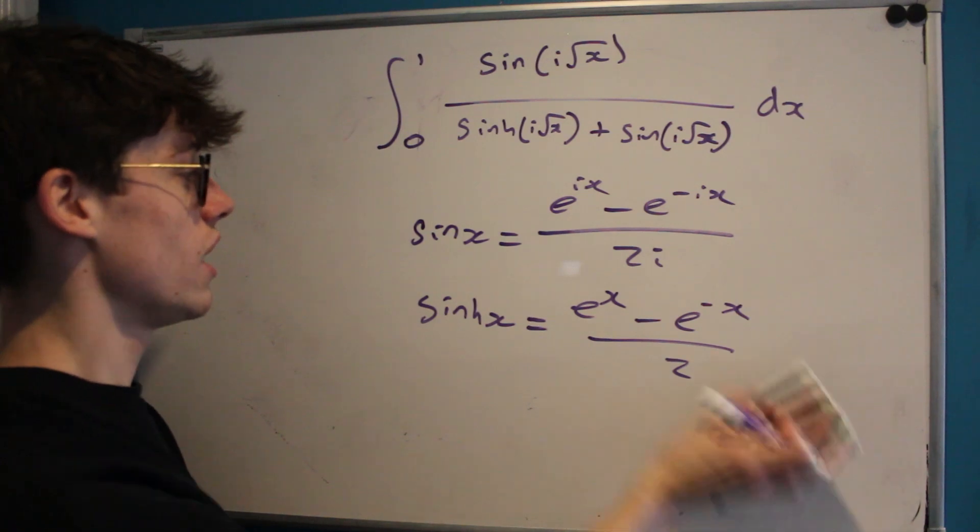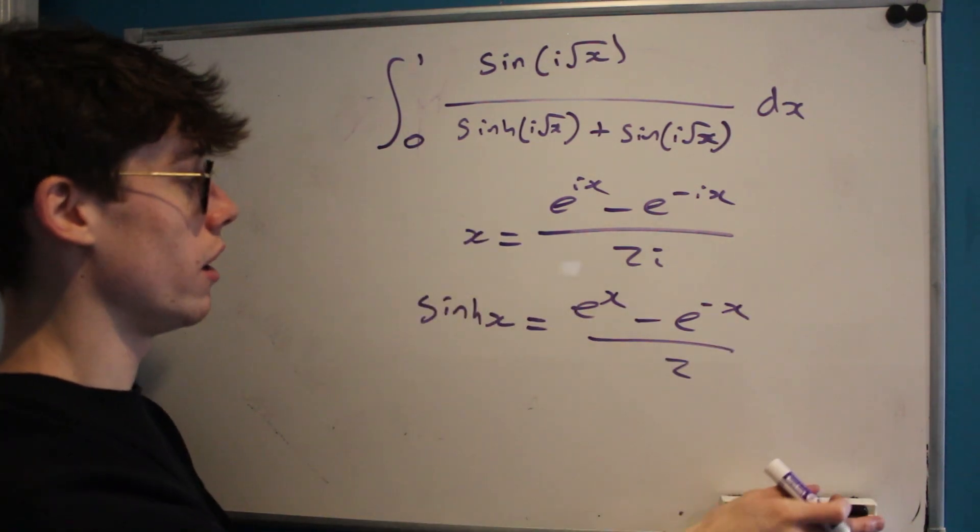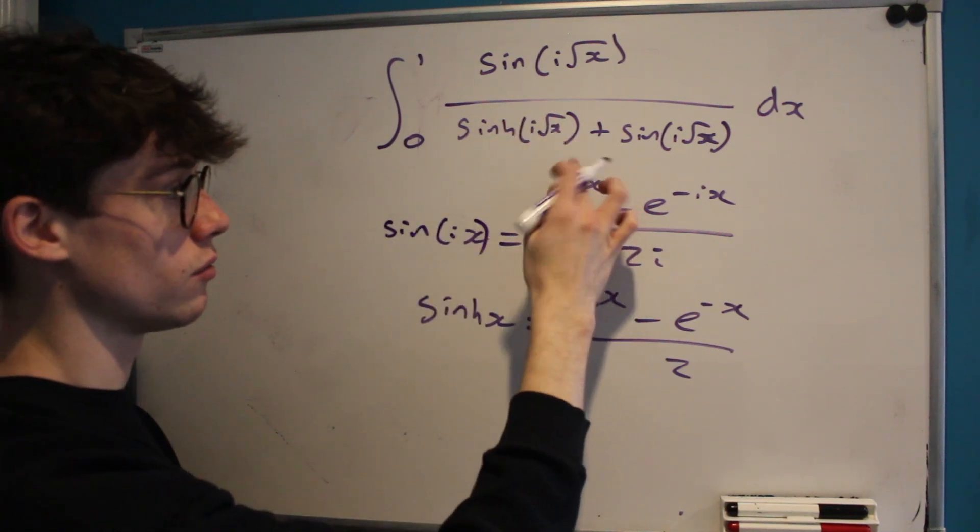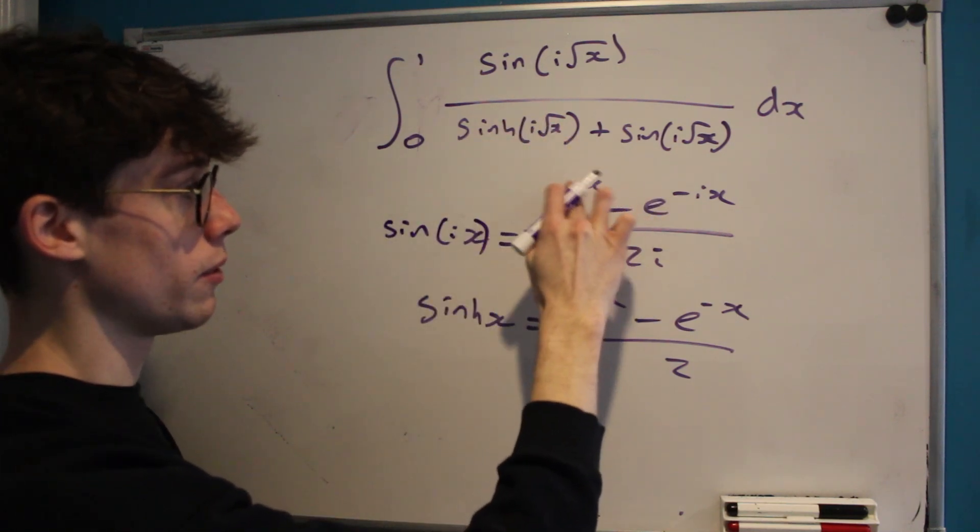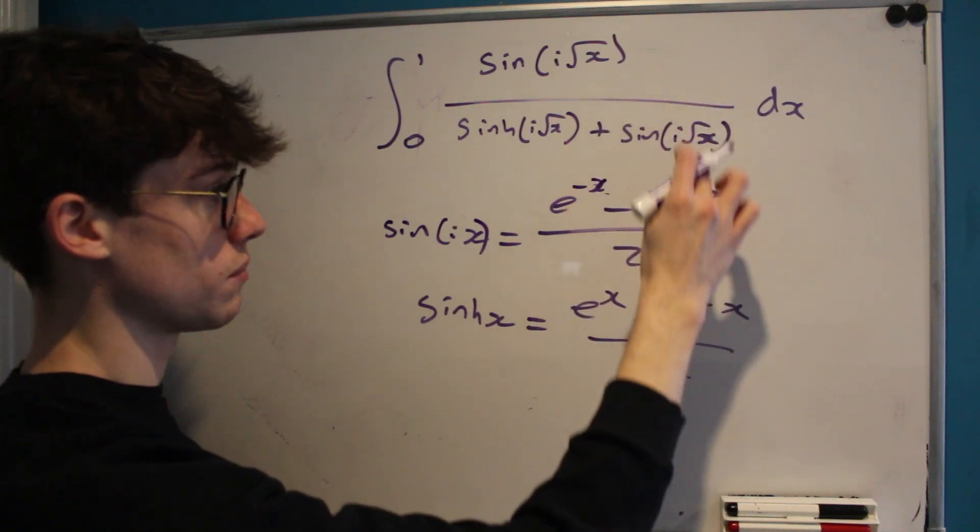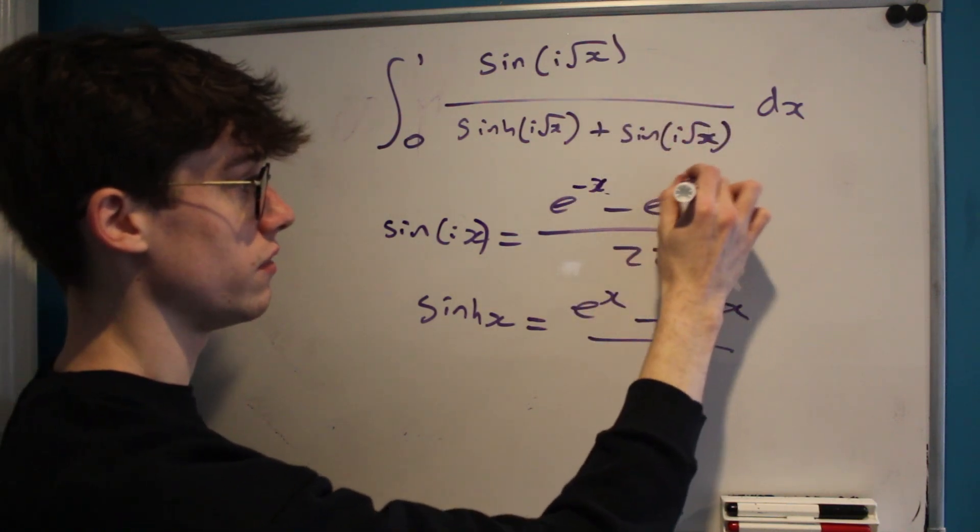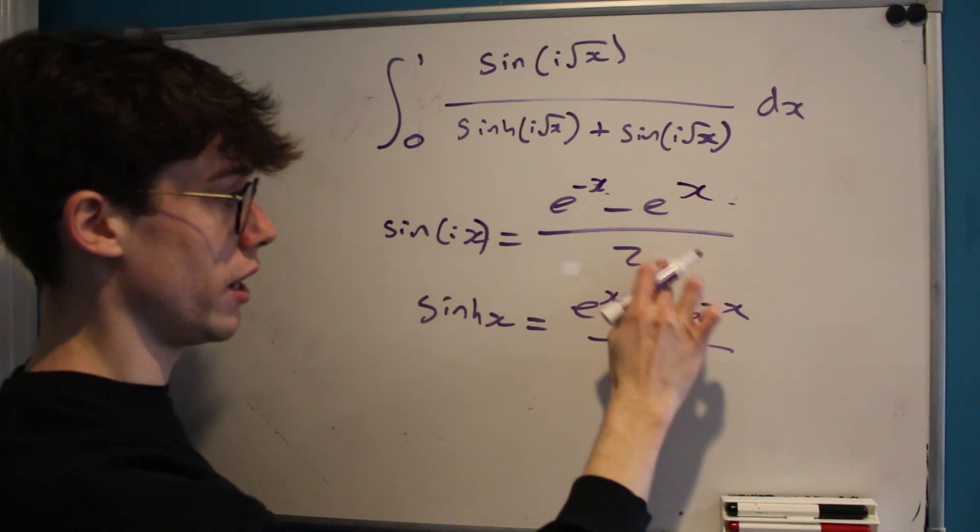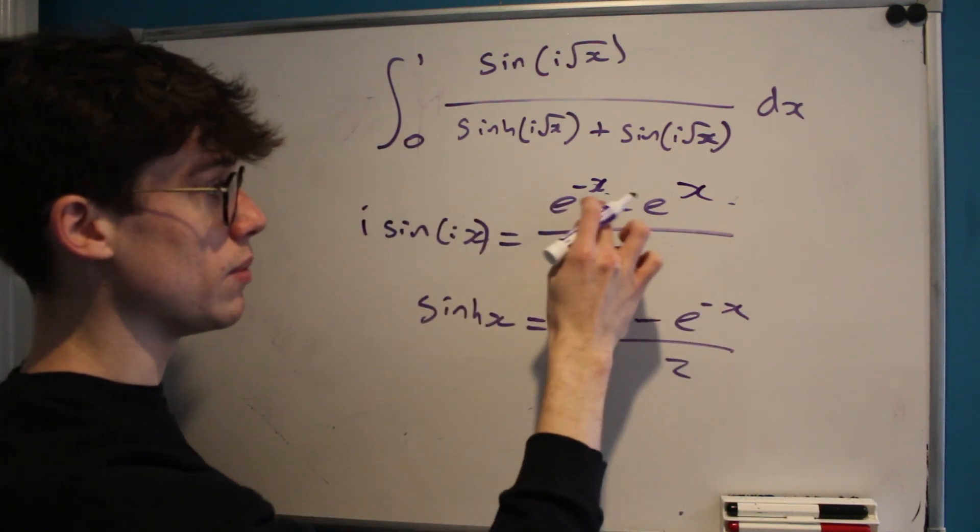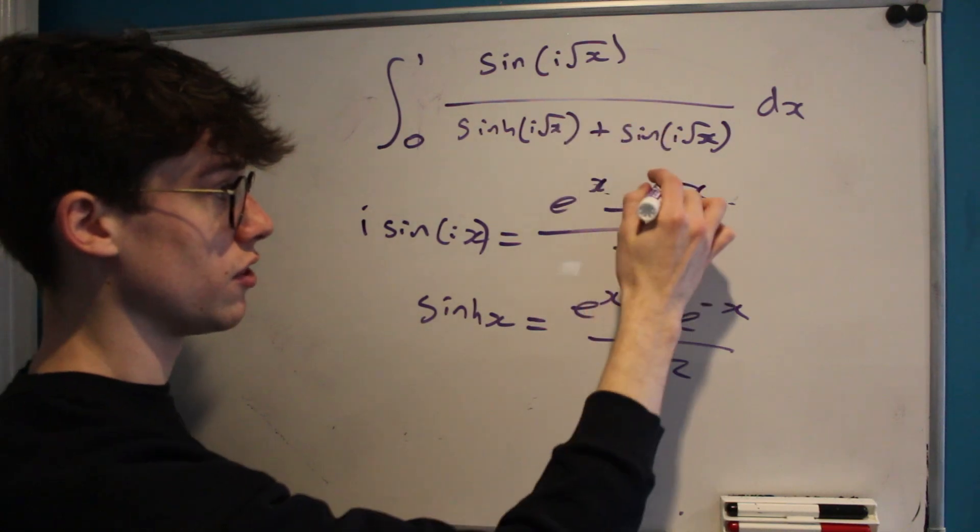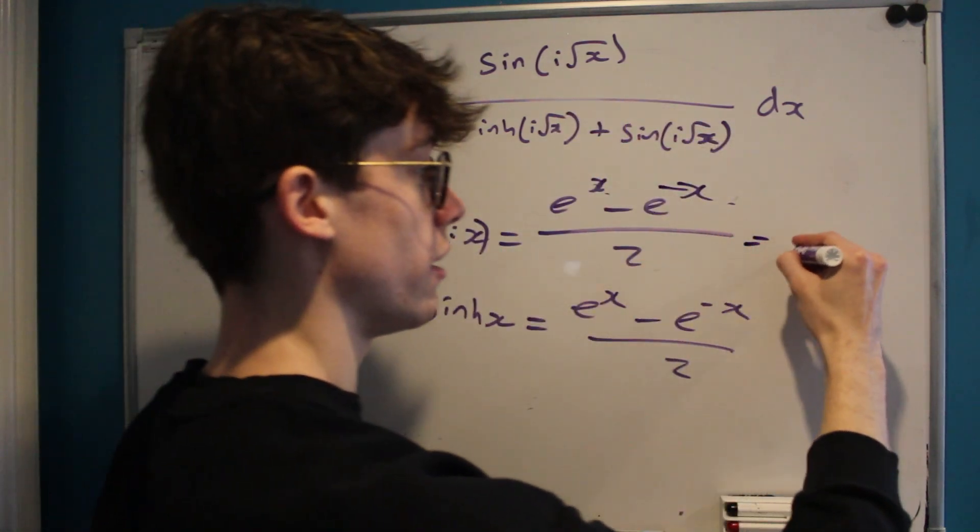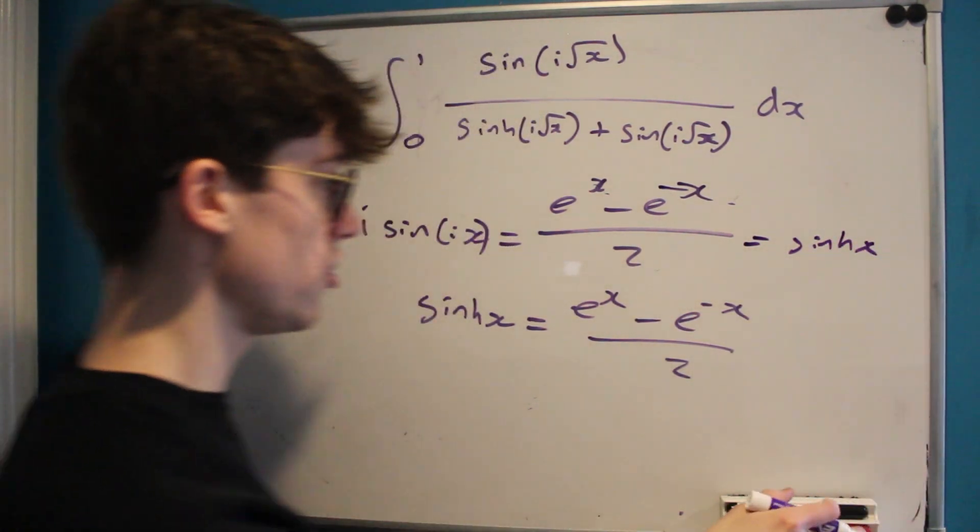First thing we can imagine is what if we plugged an i into sine x? Well we'd end up with a negative x as an exponent here, we'd end up with a positive x as an exponent here, and so if we multiplied by i and then we multiplied by a negative just to flip the order of our exponents, then we would end up with sinh x.